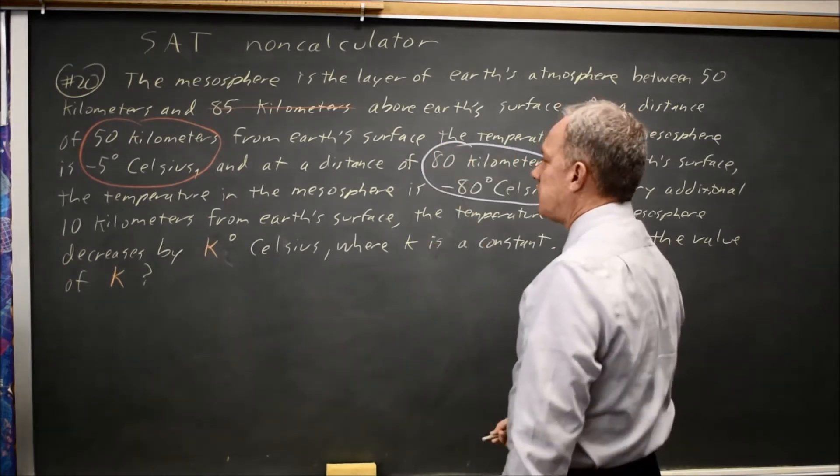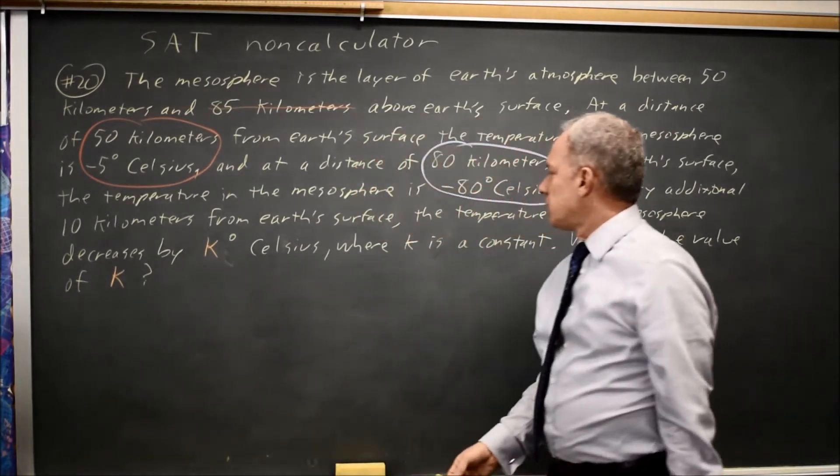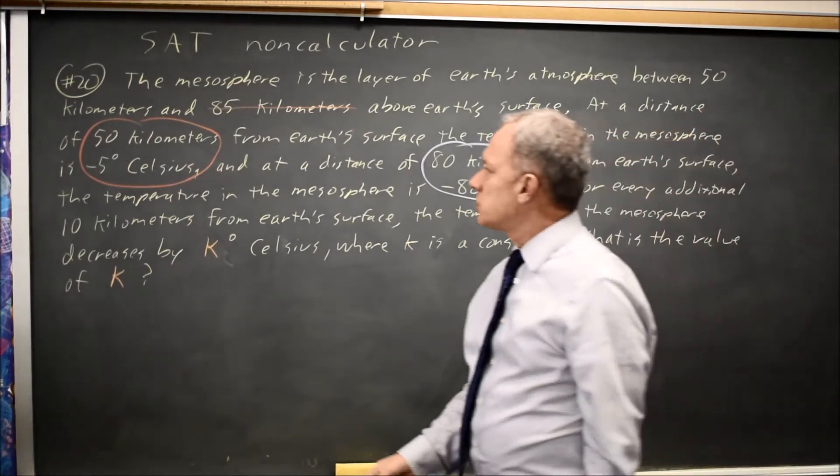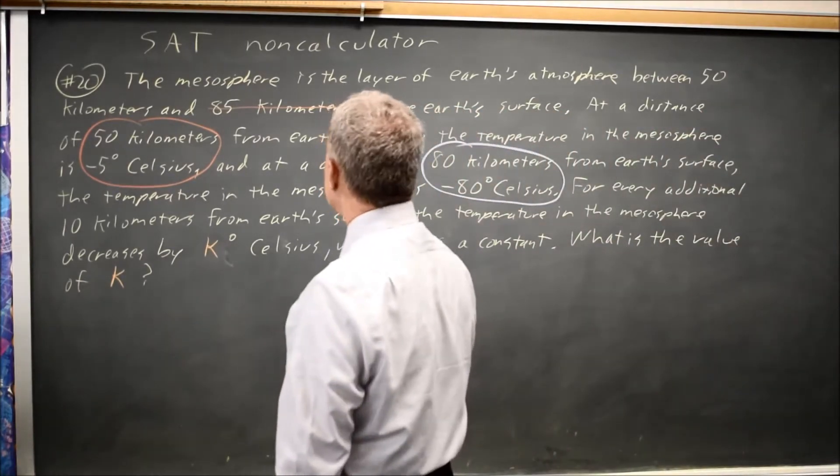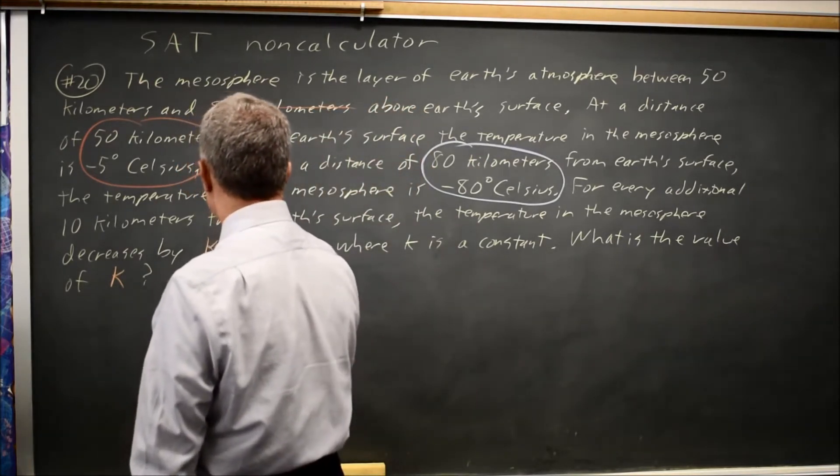And they're asking for every additional 10 kilometers from the Earth's surface, how much does the temperature decrease? So, from 50 kilometers to 80 kilometers, that is three increments of 10 kilometers.